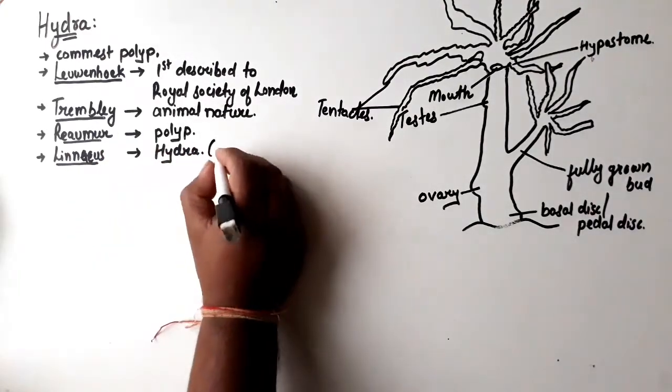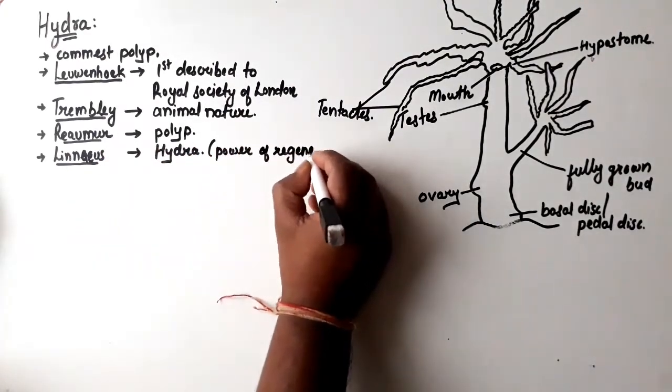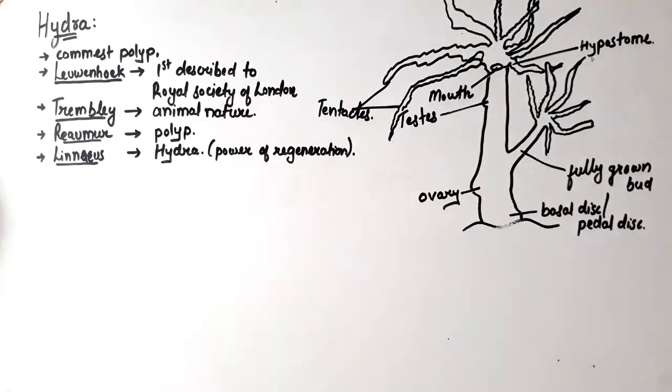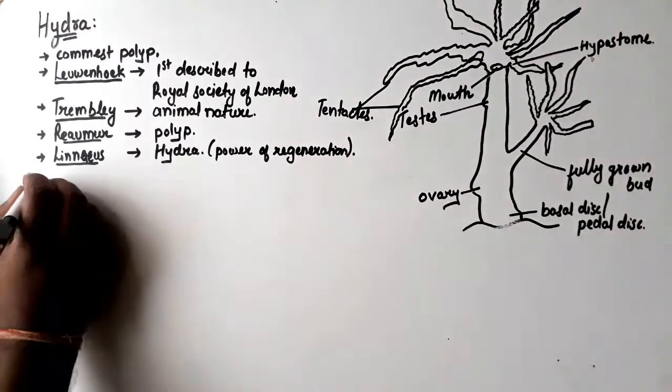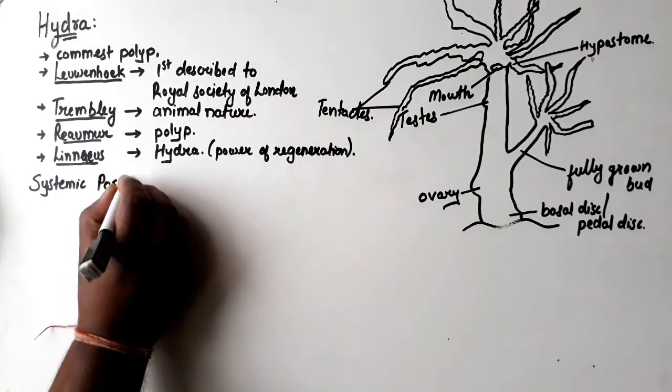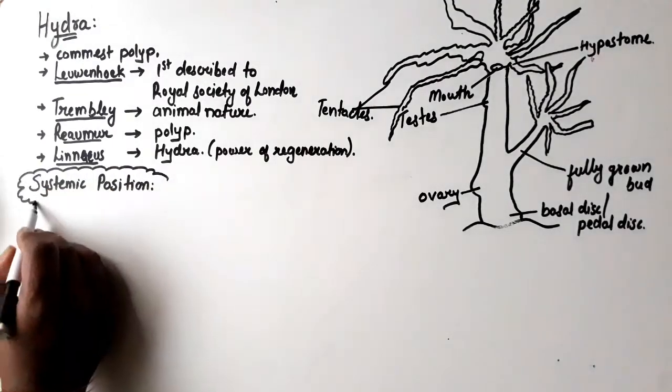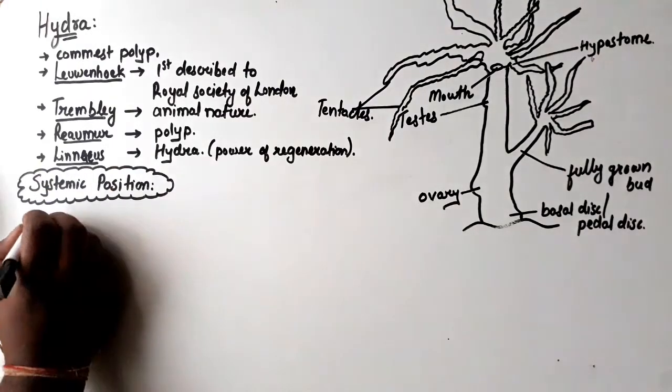...was proposed by Linnaeus. Linnaeus named it Hydra because of its power of regeneration. So we have seen the history of Hydra and how we came to know about it. Now we understand its systematic position.